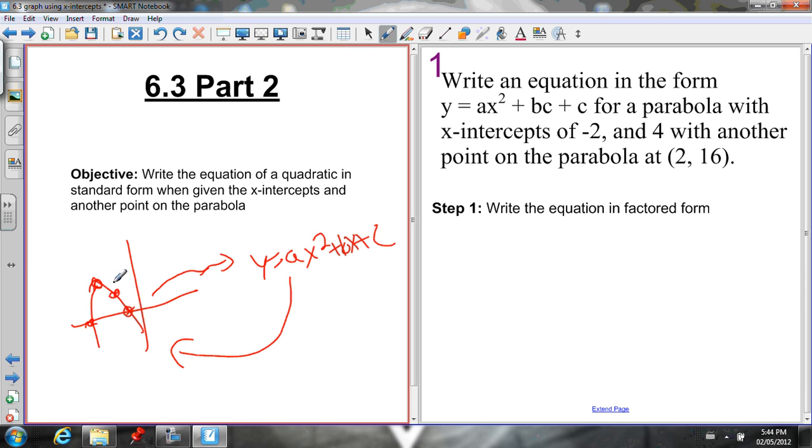So to write an equation in the form y equals ax squared plus bx plus c for a parabola with x-intercepts of negative 2 and 4 with another point on the parabola at (2, 16). So it's given us x-intercepts and another point on the parabola, information about what the graph looks like.